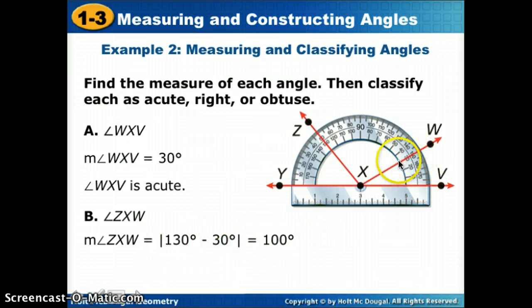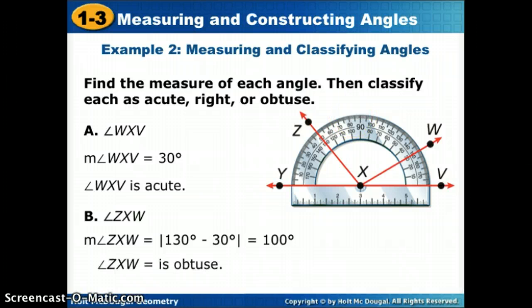Just like we did the length of a segment, we're going to take one minus the other and take the absolute value. So if I had started here, I could have said 150, where W is, minus 50, and I'd also get 100. So since 100 is bigger than 90, we're going to call that angle obtuse.